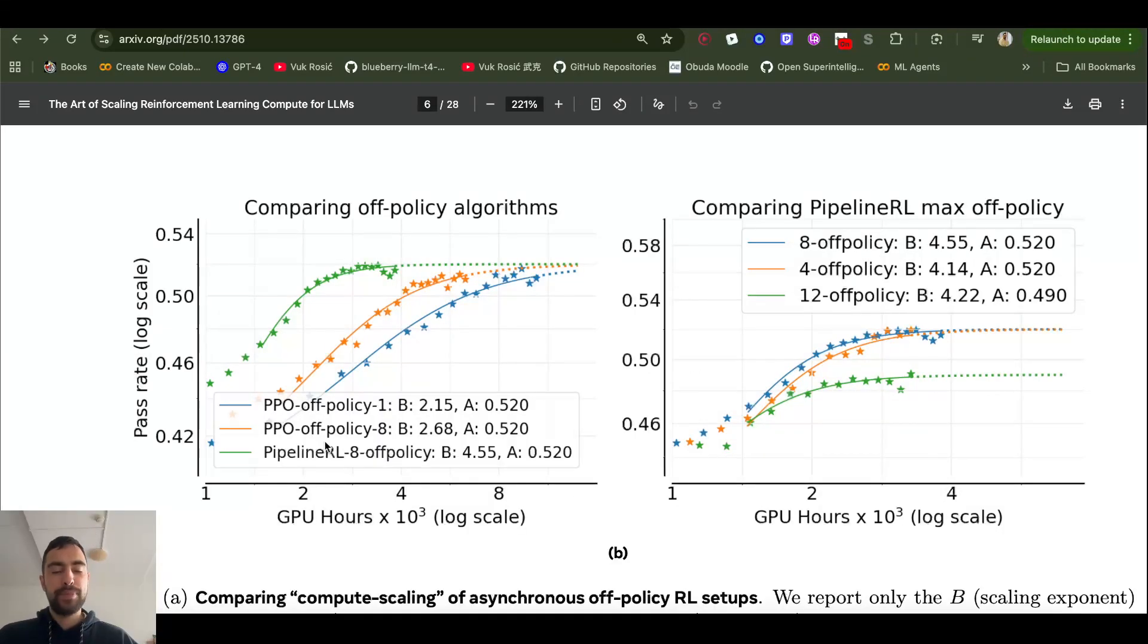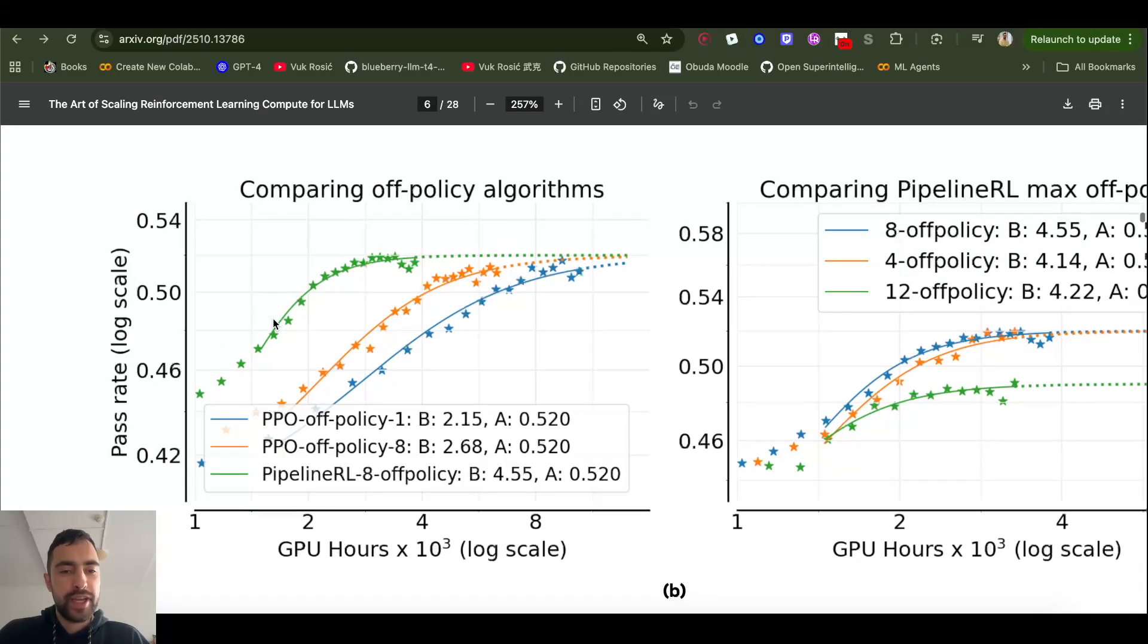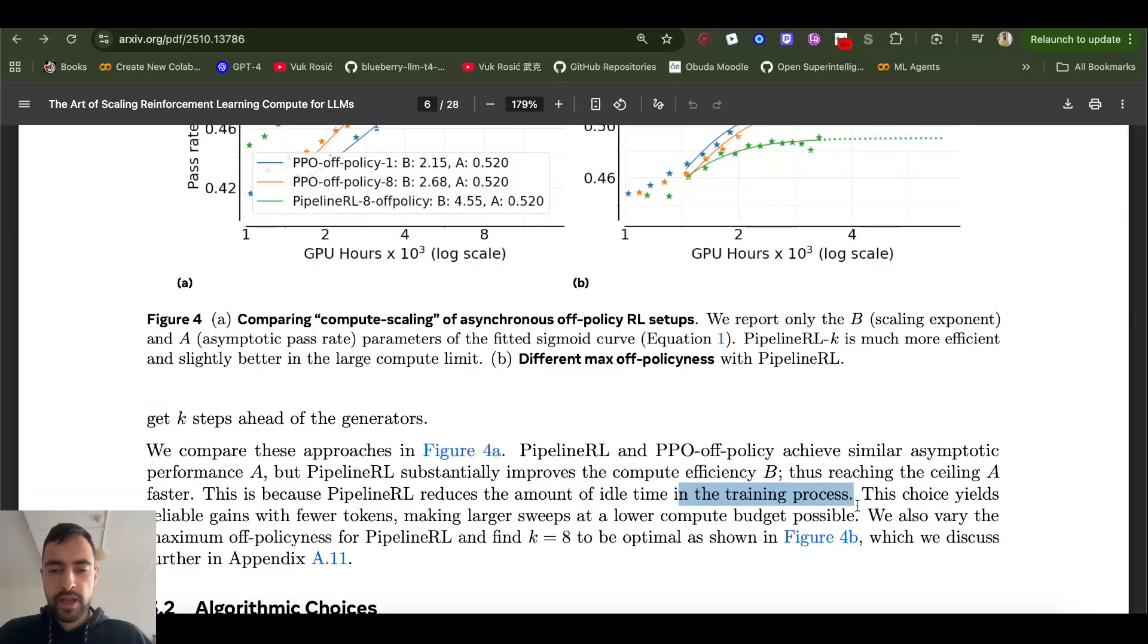And they found that this pipeline, this parallel training is better. You see, it's a lot faster here. Actually, it's way faster. You see, it needs like 2,000 hours where this guy needs like 4,000 or 5,000 hours with this off-policy. And it also maybe reaches a bit higher ceiling here. Pipeline RL reduces the amount of idle time in the training process. So it doesn't need to wait for this trainer. It just keeps generating. This guy keeps training. It's working all together.